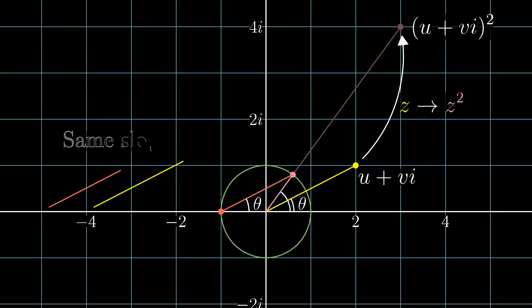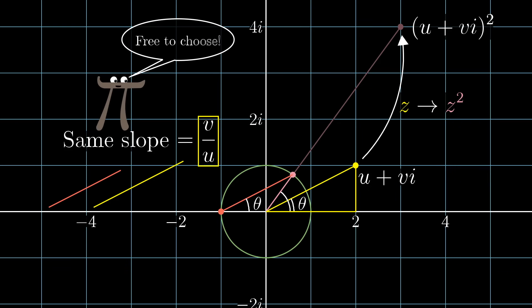But look at the rise over run slope of the line defined by a choice of integers u and v. The slope is v divided by u. And of course we can choose v and u to be whatever integers we want, and therefore we do indeed account for every possible rational slope.